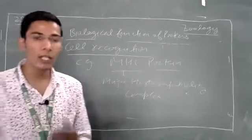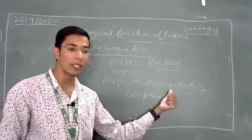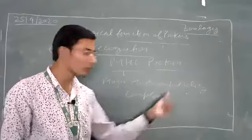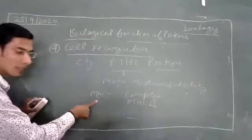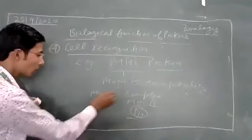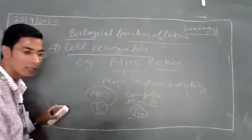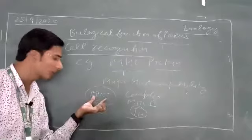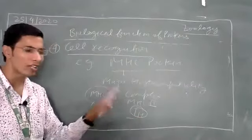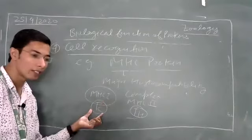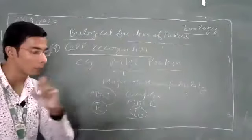MHC 1 and MHC 2 recognize different cells. In higher exams, questions are asked about which cells MHC 1 is compatible with — it is compatible with TC cells (cytotoxic T cells). MHC 2 is compatible with TH cells (helper T cells). So proteins help in cell recognition.